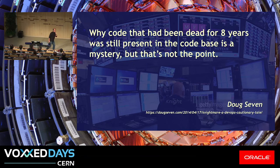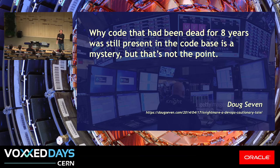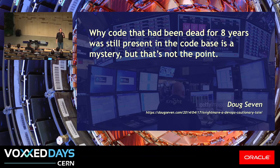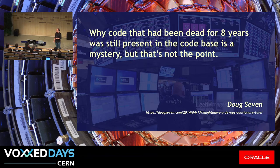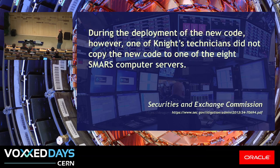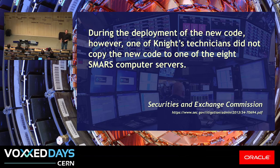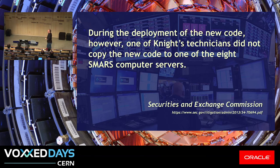A lot of these things occur not because of one thing or another, but because of one thing and another — they are the perfect storm. That code had been dead for eight years and had been utterly benign — a sleeper cell, if you like. But it took a small perturbation to activate it. If that small perturbation had not happened, they'd still be trading. It's these interactions that make a system complex.